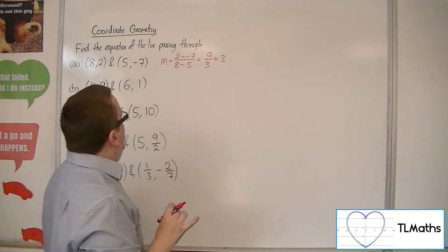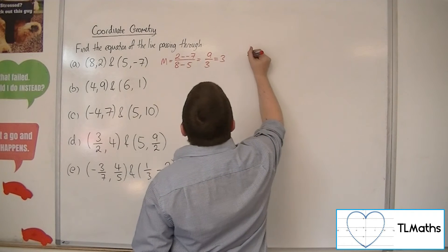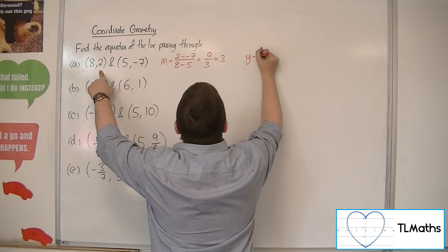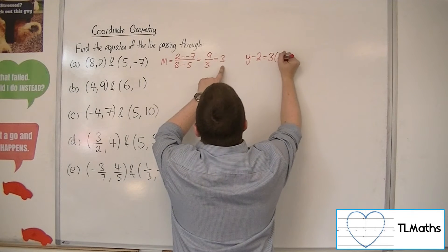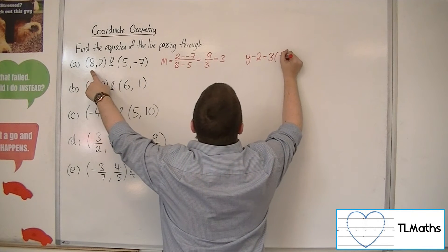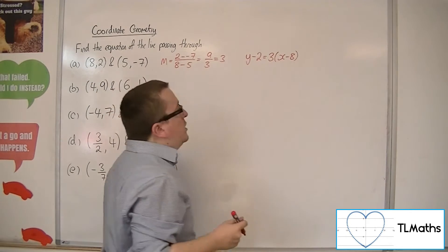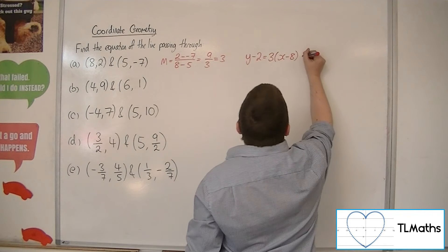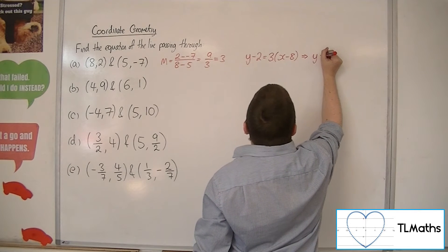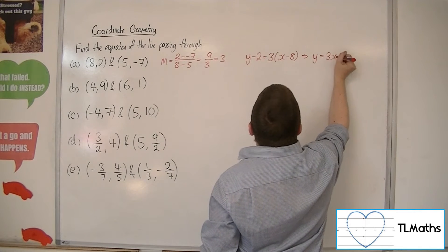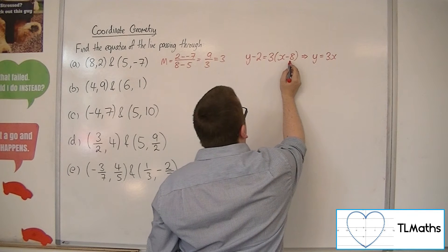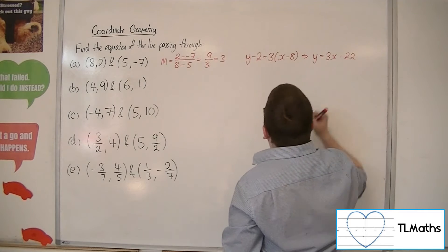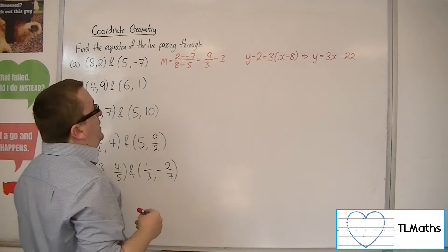So the equation of the line is y minus y1. Using (8, 2), so y minus 2 is equal to the gradient 3 times x take away x1, so x take away 8. So if we multiply this out, we can get y equals 3x, then we've got 3 lots of minus 8, so minus 24. Adding the 2 to both sides gives us minus 22. So y equals 3x minus 22.